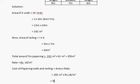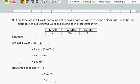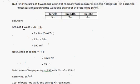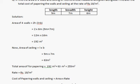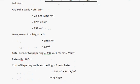Here we found the area of four walls and ceiling of the room. The total area for papering is 255 square meters and the total cost is Rs 4,590.